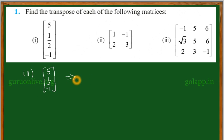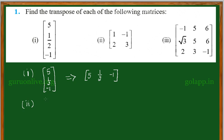If I take the transpose, whatever columns I have become rows, and whatever rows I have become columns. Here I have only a column matrix, so this column matrix becomes a row matrix: [5, 1/2, -1]. That is the transpose.